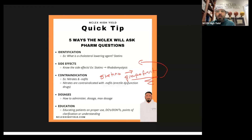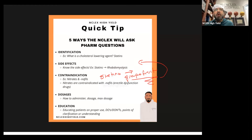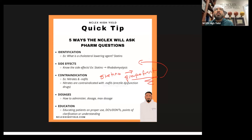Dosages. Maybe you don't need to know the dosage of every drug, but there are some drugs where you really do need to know dosages. Drugs like adenosine — big. Atropine — big. These are drugs where you actually need to know the dosages and how they're administered. But with statins, let's stick with the theme of statins right here.